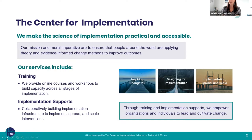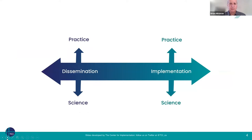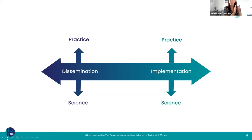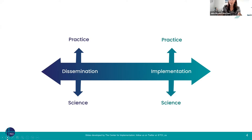A helpful grounding about where we all fit within these terms: dissemination and implementation exist on a spectrum. At one end we have dissemination — that is the act of sharing information, ideally in a bi-directional way, to increase knowledge and awareness. My guess is everyone on this call probably disseminates information fairly regularly, ideally bi-directionally.